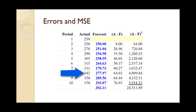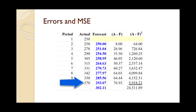331 minus 270.73 equals 60.27. 340 minus 277.97 equals 64.03. 350 minus 285.56 equals 64.44. 370 minus 293.07 equals 76.93. These 9 values will be the points on the control chart. Also shown are the squared values used to compute the mean squared error. They sum to 24,511.89. There are 9 points used to calculate it, so we divide by n minus 1 equal 8 to get the mean squared error of 3063.99.